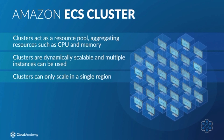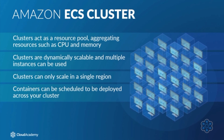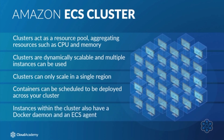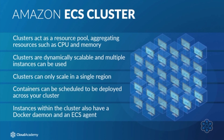With ECS, you can schedule your containers to be deployed across your cluster based on different requirements, such as resource requirements or specific availability requirements through the use of multiple availability zones. The instances within the Amazon ECS cluster also have a Docker daemon and an ECS agent installed. These agents communicate with each other, allowing Amazon ECS commands to be translated into Docker commands.